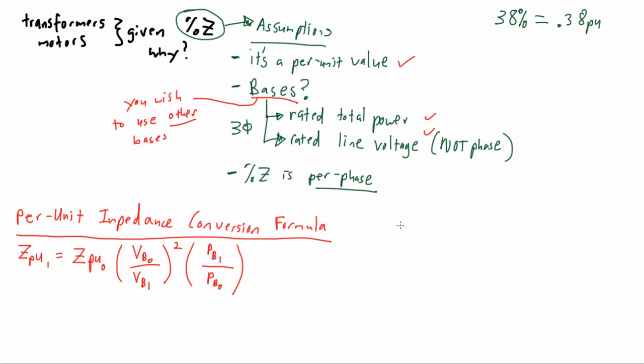Because you can be asked a PE question where a percent impedance is given, and yet you will be required through some instruction in the problem to use a new per unit value. So you're going to need to use this conversion formula.